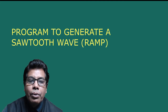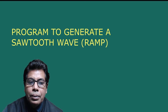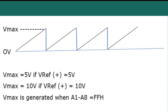Now let us go to the program to generate a sawtooth wave, that is ramp. The waveform shows an upward ramp type signal with 0 volts and Vmax. Voltage output will increase linearly from 0 to Vmax. Vmax equals 5 volts if V reference is 5 volts, or Vmax equals 10 volts if V reference is 5 volts with a gain of 2. Vmax is generated when A1 to A8 equals FFH, the maximum value. It is a linear rise from 0 to Vmax followed by an immediate drop to 0, giving us the sawtooth waveform.